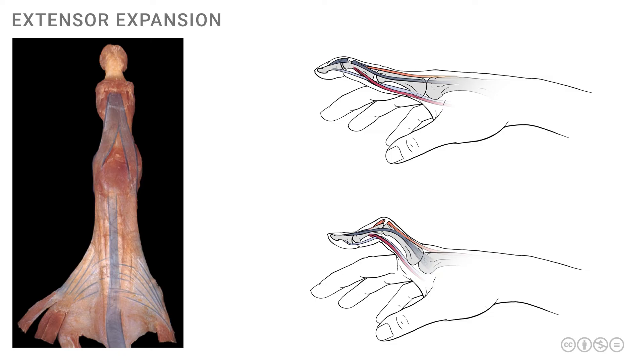Note also the interossei and lumbricals, which are attaching onto the extensor expansion, as seen in the lower part of the photograph at the proximal end of the digit.